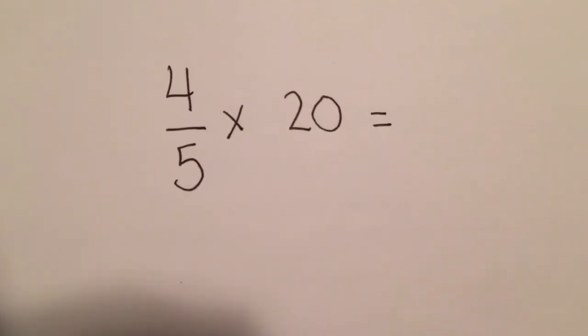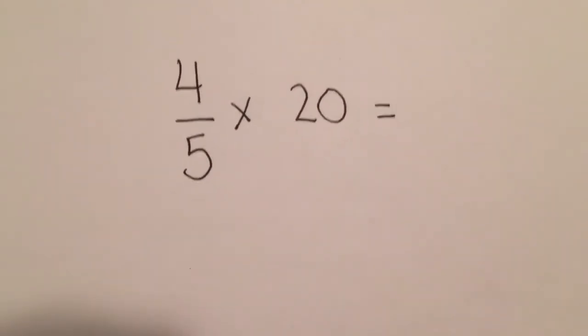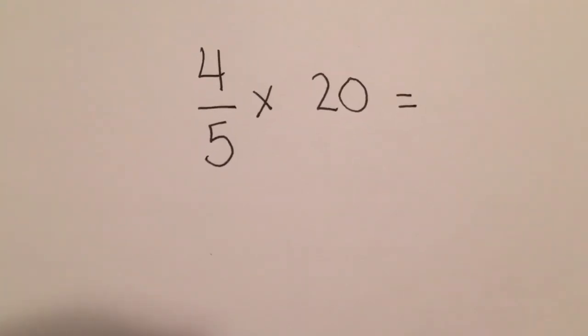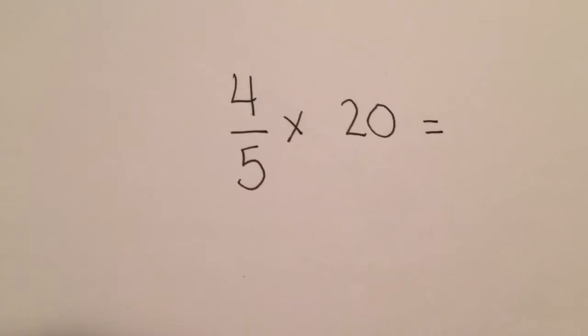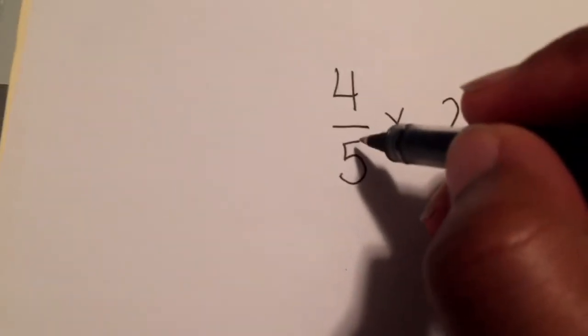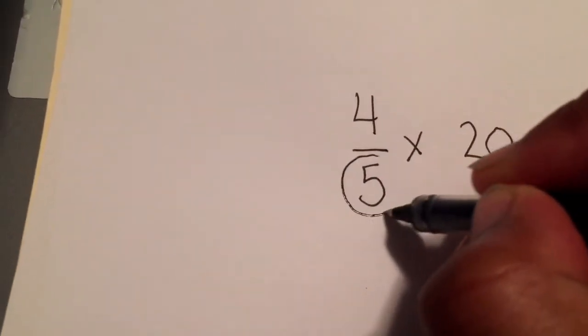Okay, the goal of this video is to find four-fifths of 20, four-fifths times 20, using an array. The first step to this process is to look at the denominator, so I'm going to go ahead and circle the denominator.